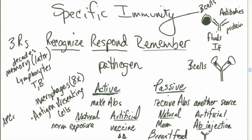An antigen-presenting cell — what does that mean? After the macrophage has engulfed the pathogen, torn it up, and destroyed it, it figures out what its surface marker is, and then displays that surface marker for our white blood cells to know what the bad guy is. Antigen-presenting cells first take in the pathogen, engulf it, and tear it apart.